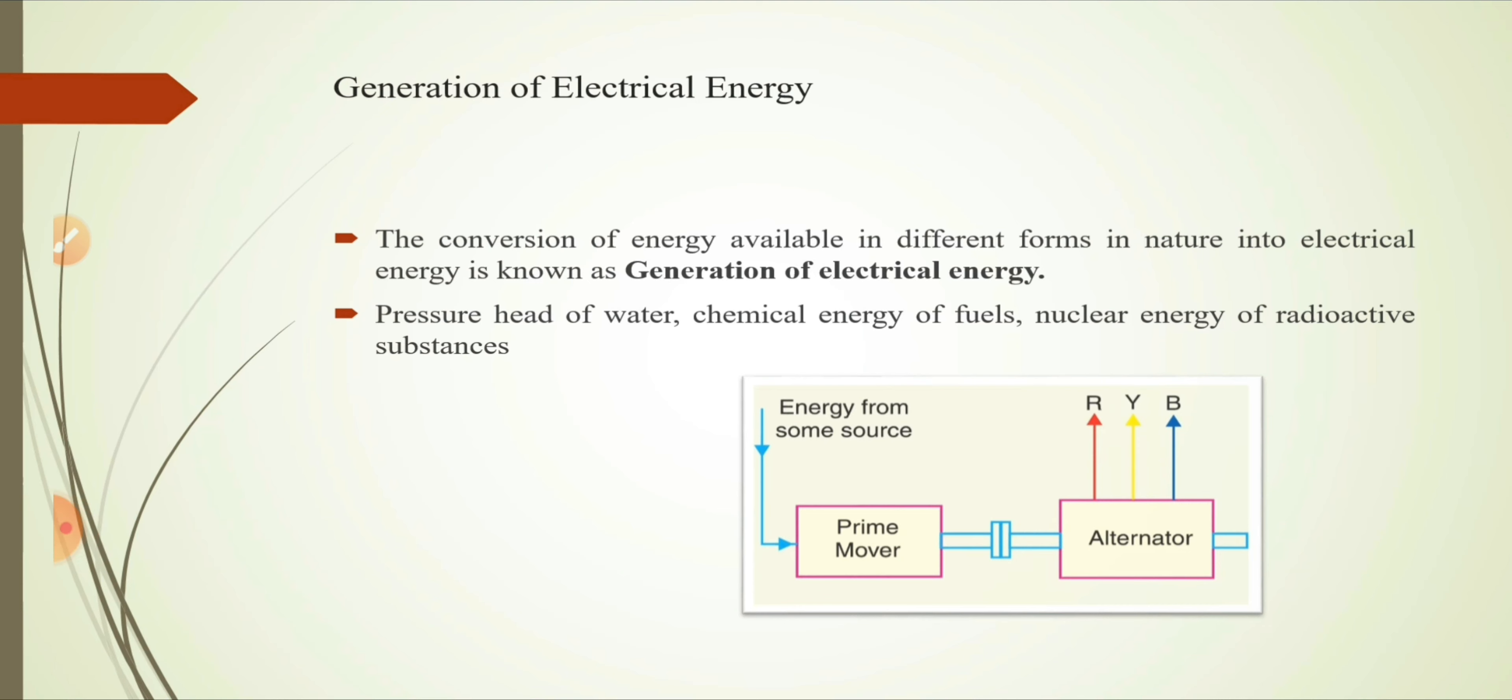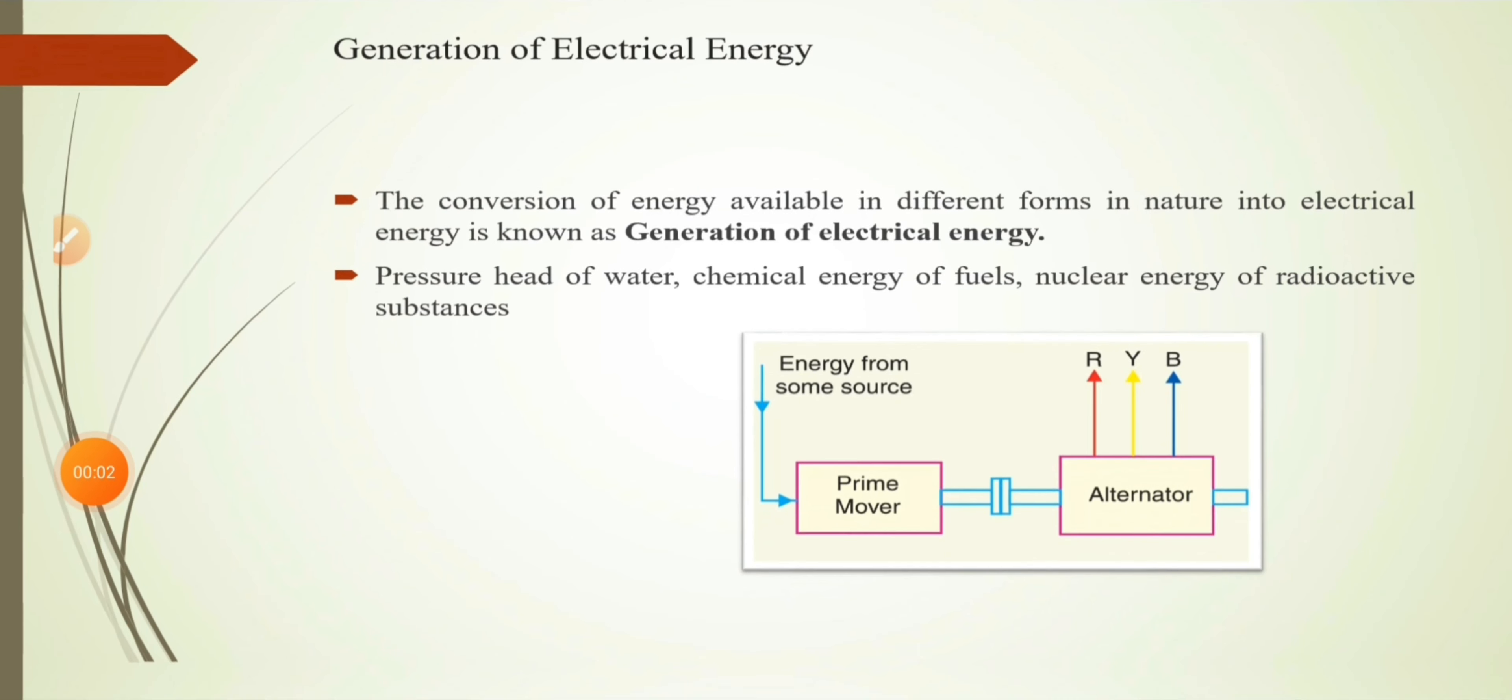As you can see in the picture, the arrangement for generation of electrical energy essentially employs an alternator coupled to the prime mover. The prime mover is driven by the energy from energy sources in nature such as wind. Now with that being said, let's jump to our next topic which is sources of energy.